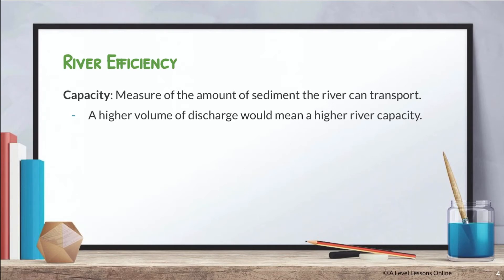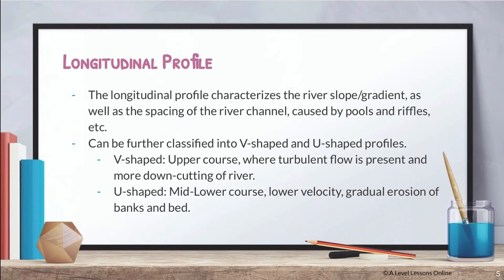A river with high velocity, high discharge, and high energy will be very competent in transporting sediments from small to large. Capacity looks at the amount — how much sediment a river can hold and transport. At a given discharge, if the river can transport a large amount of sediment and still flow normally, it is very efficient. A high volume of discharge means higher river capacity. When a river has both high competence and high capacity, it is likely at equilibrium, since there is enough energy to erode, transport, and deposit sediments where necessary.